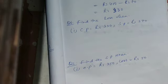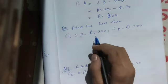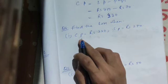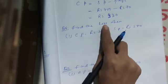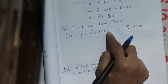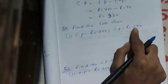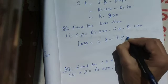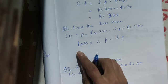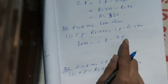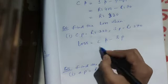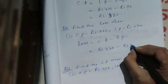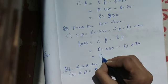Next: find the loss. When CP is greater, it is a loss. Gain formula is SP minus CP; loss formula is CP minus SP, because in case of loss CP is greater. Here CP is rupees 330 and SP is rupees 270. So loss equals 330 minus 270, which is rupees 60.